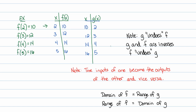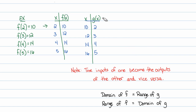Now that we know that these two are inverses from the conceptual lecture — g undid f, g and f are inverses — the inputs of one become the outputs of the other and vice versa. In other words, the domain of f is the range of g, and the range of f is the domain of g. Because of that, another name for g, and probably a more proper name, is f inverse. And this implies that f inverse of 10 equals 2, f inverse of 12 equals 3, f inverse of 14 equals 4, and so on.